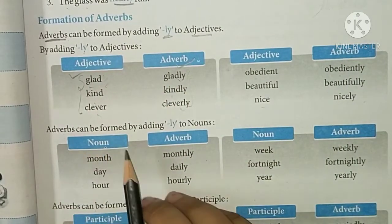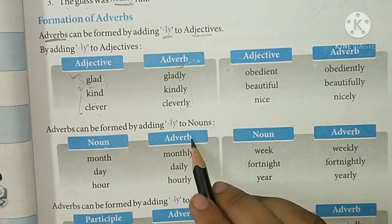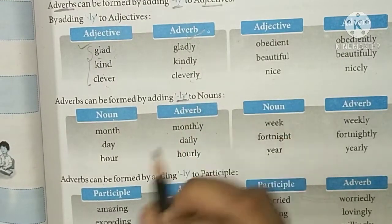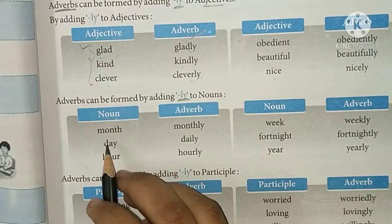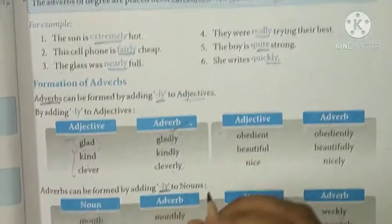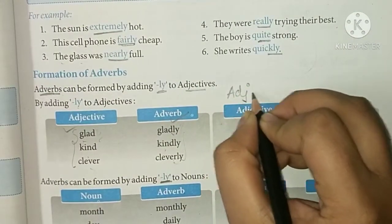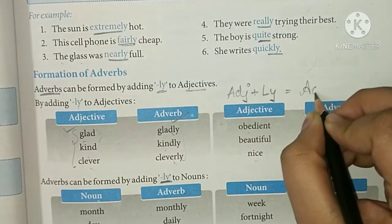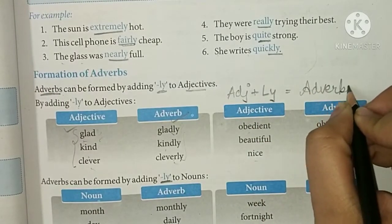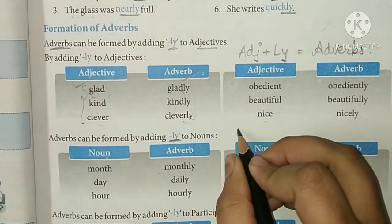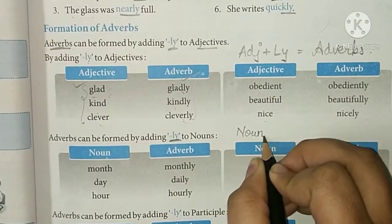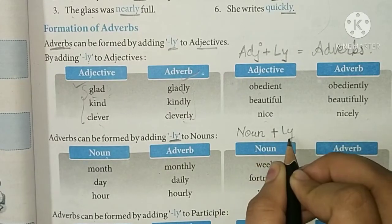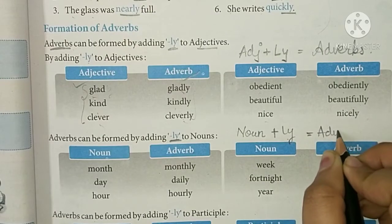We have seen adverbs formed from adjectives. Now, adverbs can also be formed from nouns — if we add -ly to a noun, it also becomes an adverb. Similarly, adverbs can be formed by adding -ly to participles.